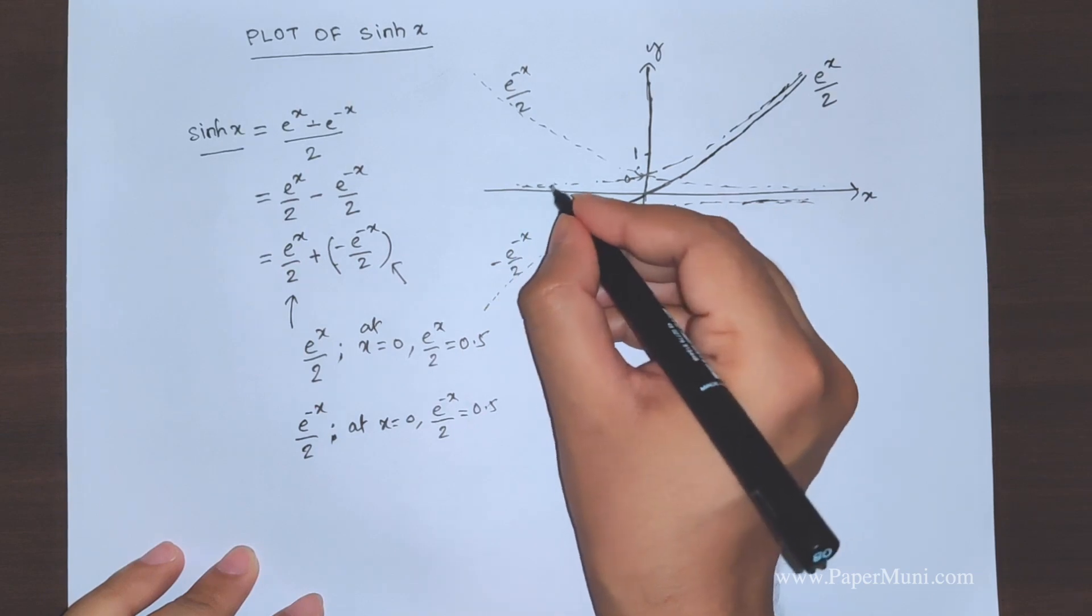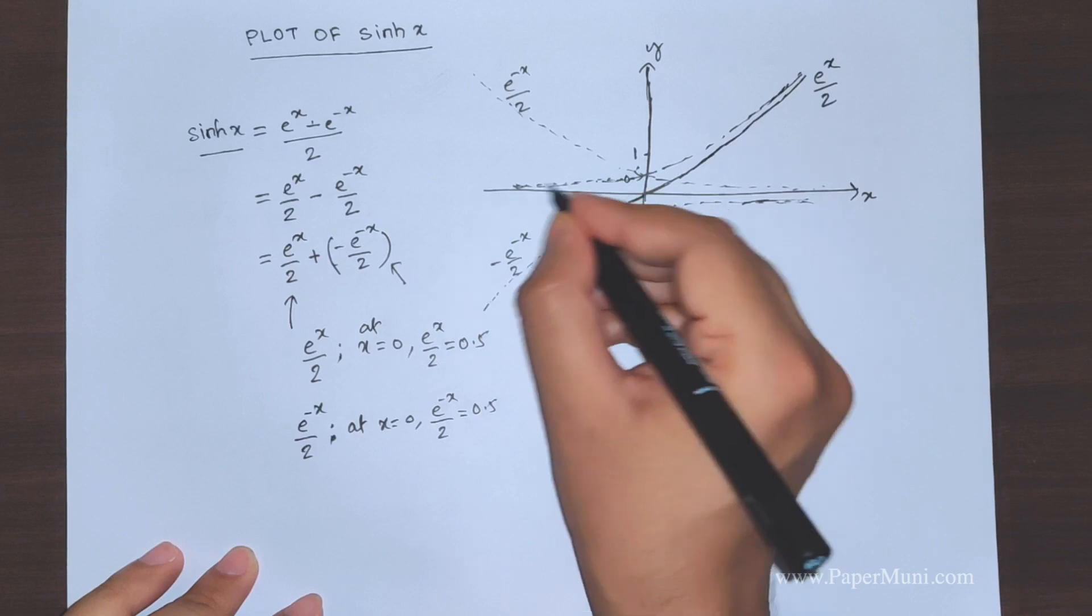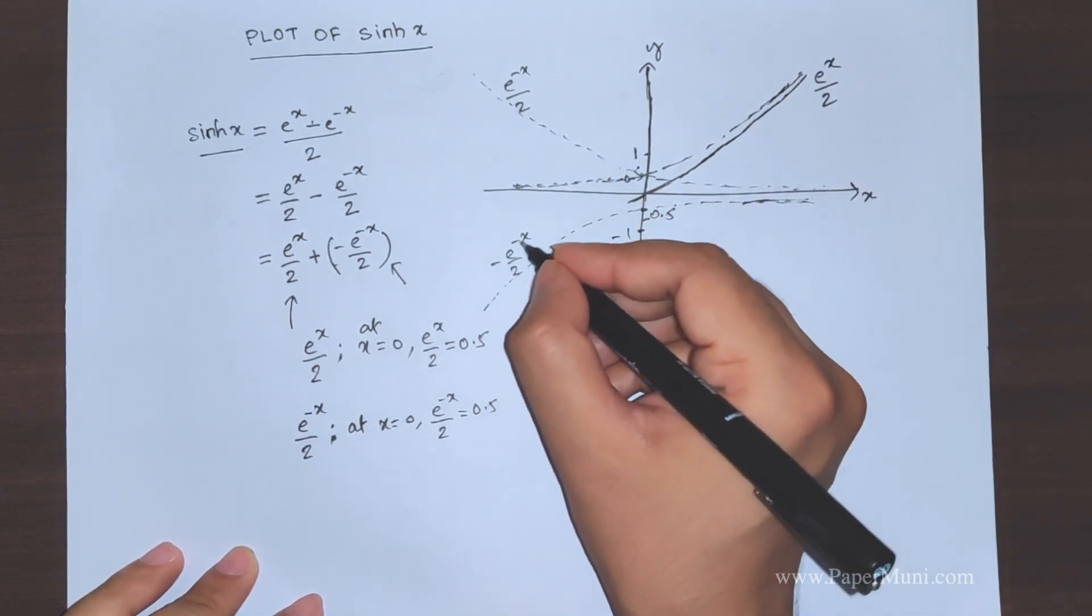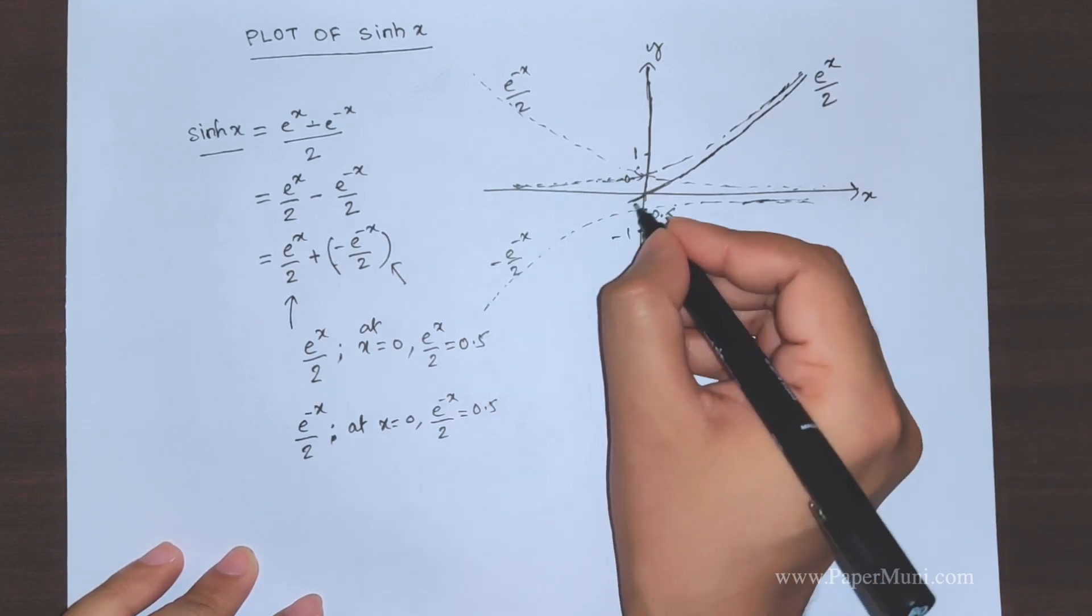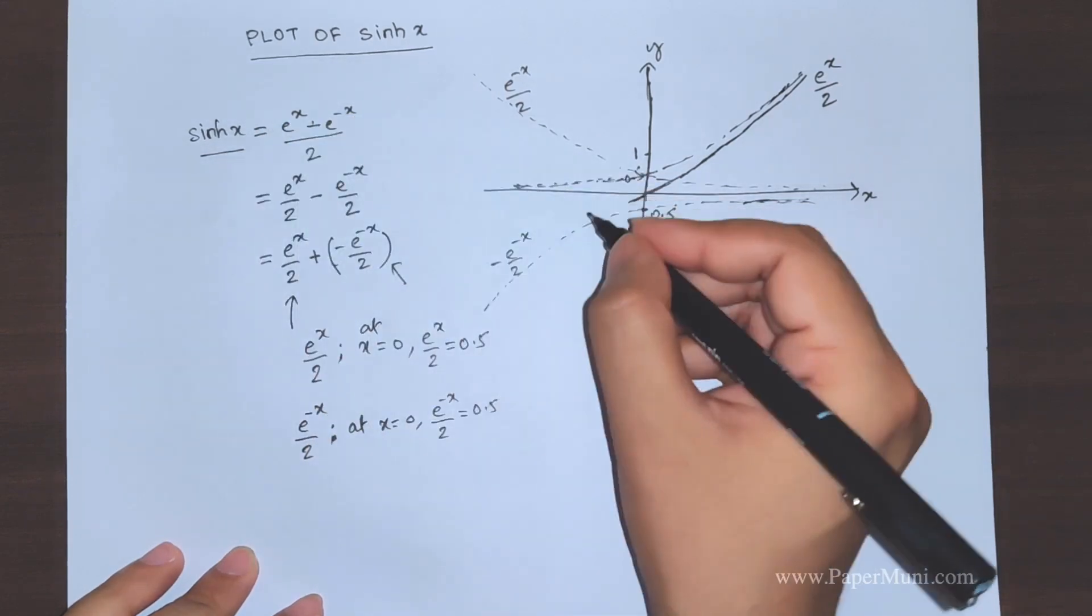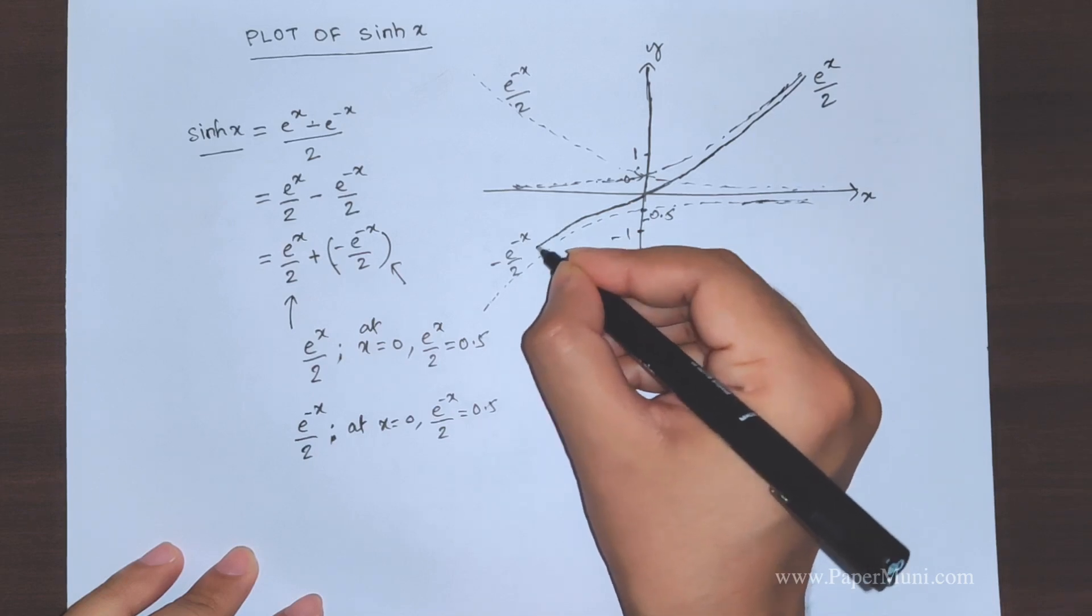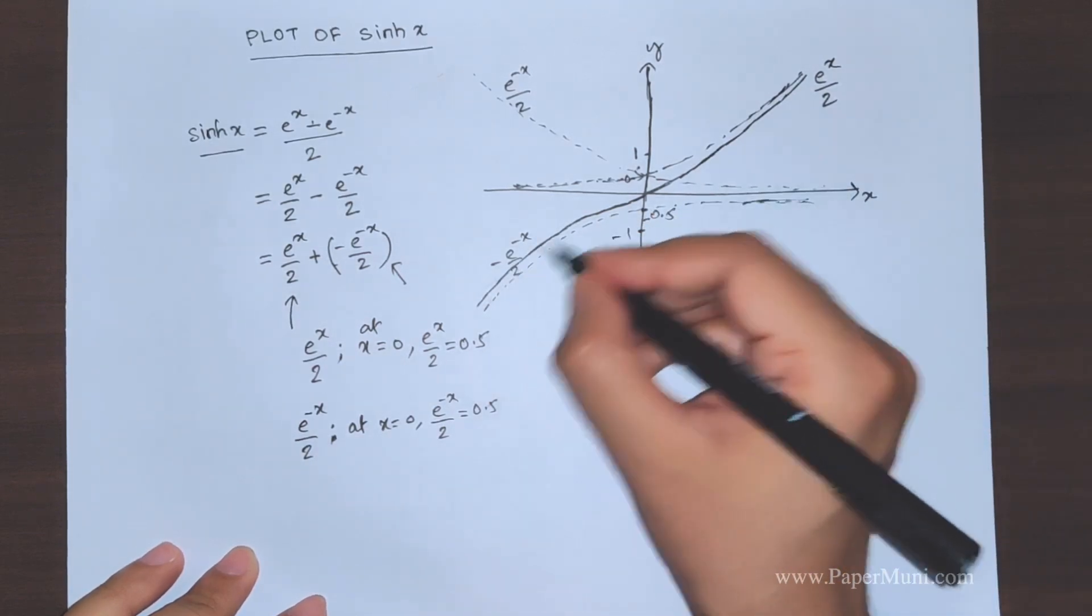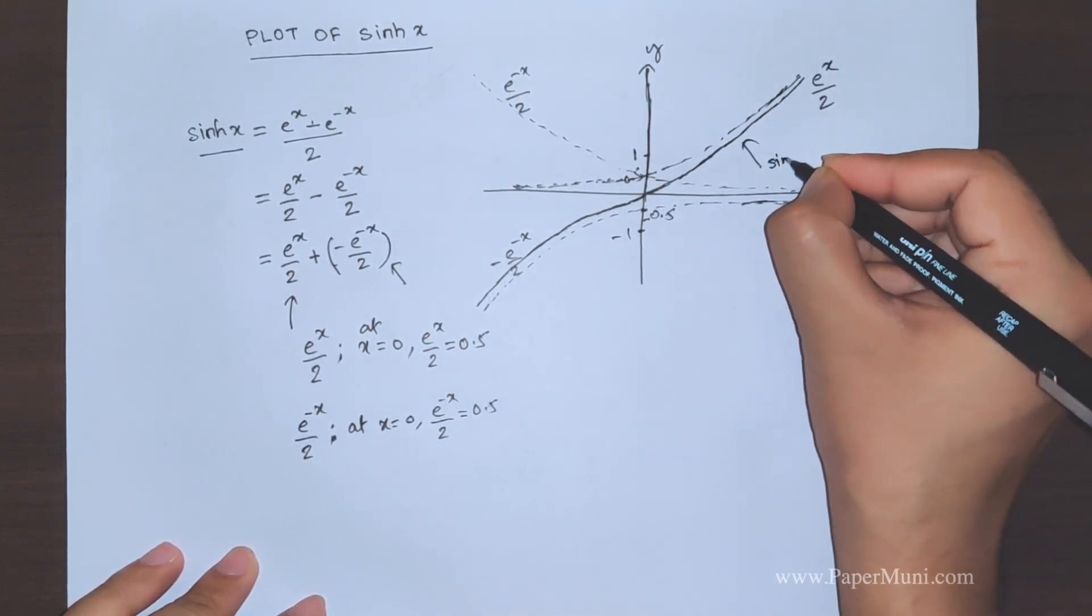Now again what happens in this region is this graph has positive values with the values going on reducing, but this graph, the values keep on increasing. So this value will always be bigger than this value, so this will always be negative. This region will always be, the graph of sinh x will be negative, so this will follow this graph but like this. So this is the final graph of sinh x, this is sinh hyperbolic x.